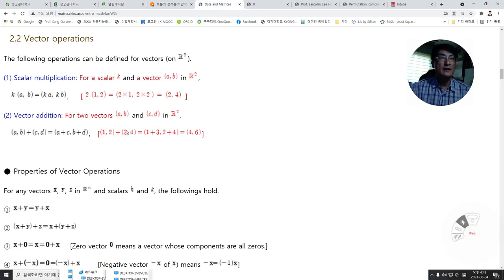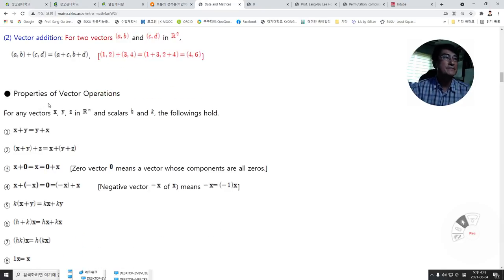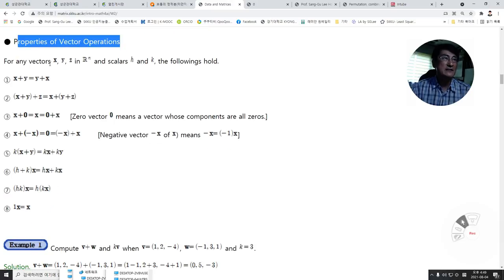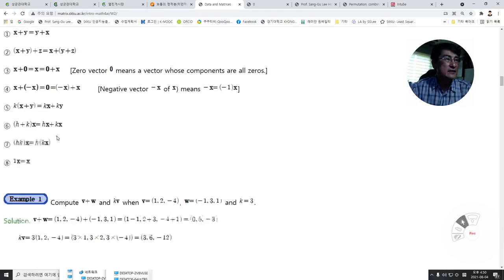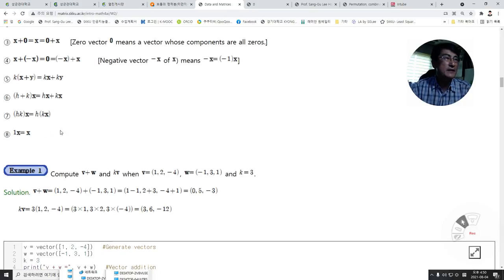The properties of vector operations: For any vectors x, y, z in Rⁿ and scalars h and k in real numbers, the following holds: the commutative law for addition, associative law for addition, there exists a zero vector whose components are all zeros in Rⁿ, negative vector -x of x, associative law for addition and scalar multiplication, and so on. These are the eight conditions.